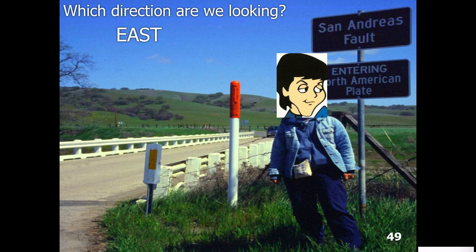This slide is a continuation of the San Andreas Fault discussion, showing a picture of a little city in California called Parkfield. Parkfield has a population of about 18. It's a great little trip to take from Bakersfield — about 100 miles away.